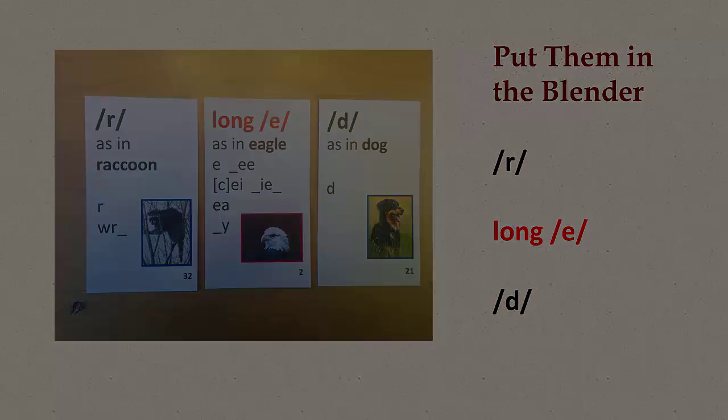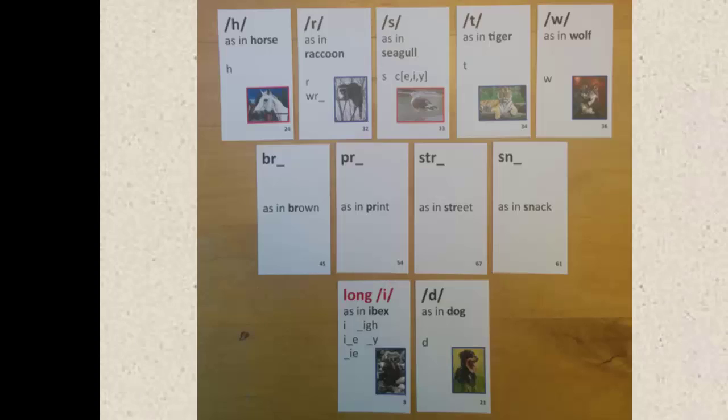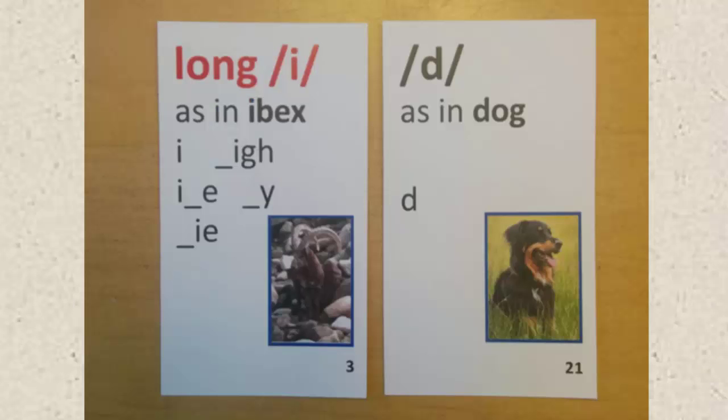Or how about Rhymin' Simon? Students select onsets, which are the beginning letter or letters of a word, from their own animal sound-spelling cards and consonant blend cards to form a deck to play. The teacher then forms an N rhyme from the animal sound-spelling cards and consonant blend cards on the projector, board, or table, and says, Simon Says, play your cards to complete as many rhymes as you can.